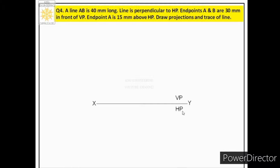We write VP and HP with gothic letters. The third step is to pick the point about which maximum data is given. Data for both points from VP is given, but from HP only point A's data is available. So maximum data about A is available, and we will plot the different views of A first. We mark a reference point on the reference line, calling it a₀. Point A is 15 mm above HP, so we plot this distance on the opposite plane, VP.